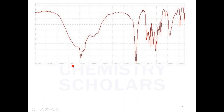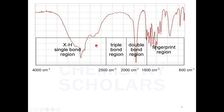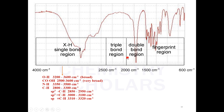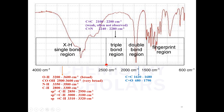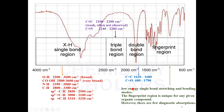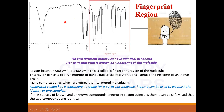A typical IR spectrum can be divided into four regions. The single bond region from 2500 to 4000 cm⁻¹ shows all single bonds: O–H, N–H, C–H. The triple bond region from 2000 to 2500 cm⁻¹ shows C≡N and C≡C. The double bond region shows C=C, C=O, and C=N. The fingerprint region stretches from 600 to 1500 cm⁻¹ — it is a unique region that is complex to interpret.